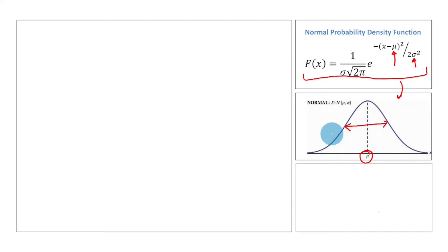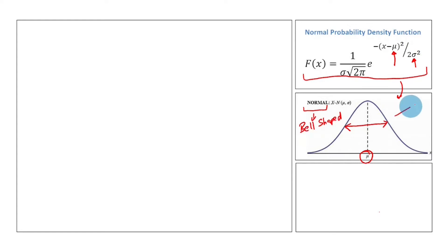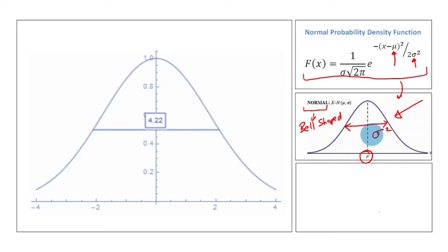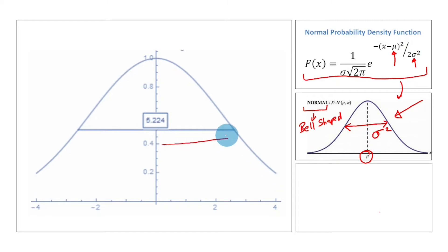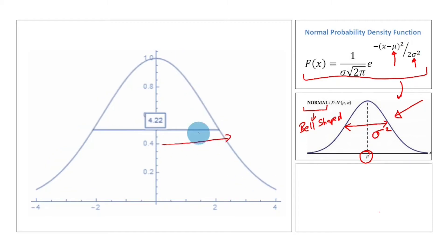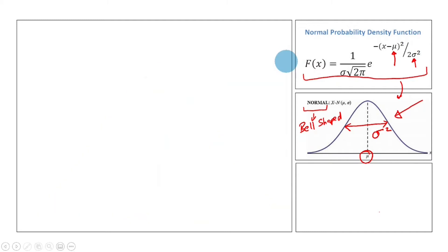Variance defines or identifies the dispersion in data. Note that the Gaussian distribution is also referred to as normal distribution or a bell-shaped distribution. We call it bell-shaped because the opening of the bell is controlled by the variance sigma squared — a higher variance value gives a bigger opening compared to a lower variance value.